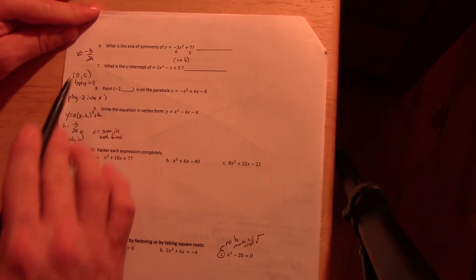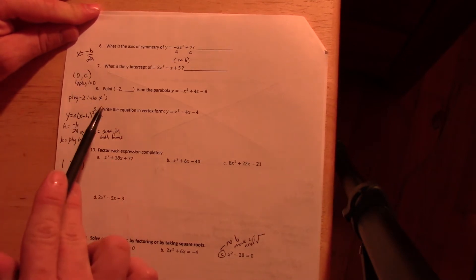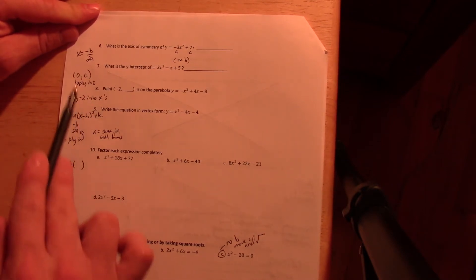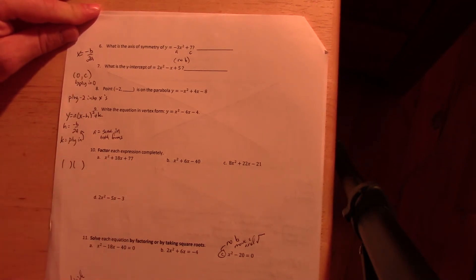You can see up at the top here some of the notes I have: taking the opposite of B over 2A happens a lot, and then just other stuff I have written in the margins here, as well as down at the bottom of the sheet.